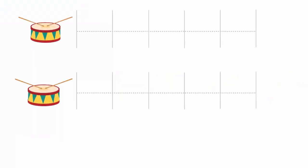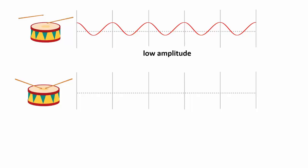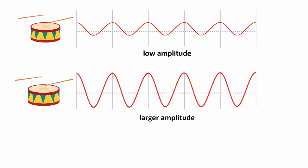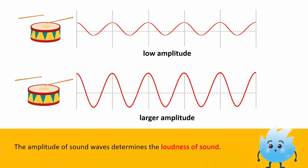Consider this example: if we strike a drum lightly, we hear a soft sound, because the sound produced is of low amplitude. However, if we strike the drum harder, we hear a louder sound. In this case, the sound waves have a larger amplitude. Hence, the amplitude of sound waves determines the loudness of sound.